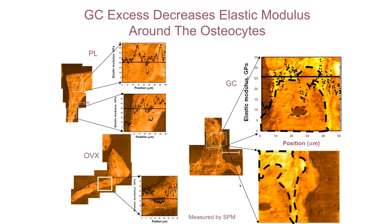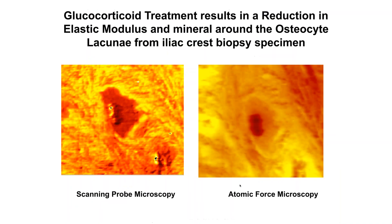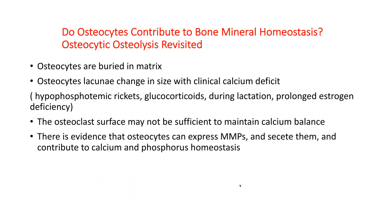In glucocorticoid-treated mice, you see something very different: larger osteocyte lacunae, areas of dark low elastic modulus inside the trabeculae itself, and a dark area next to the osteocyte with a bright halo around it. We were lucky to obtain human iliac crest biopsy samples and saw this was also happening clinically in patients on glucocorticoids — they had areas around their osteocytes with decreased elastic modulus and decreased mineral.